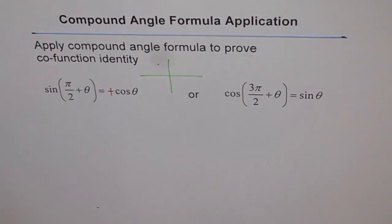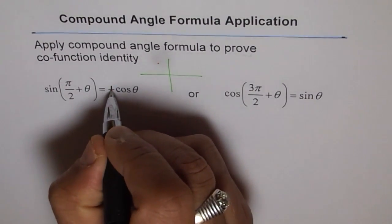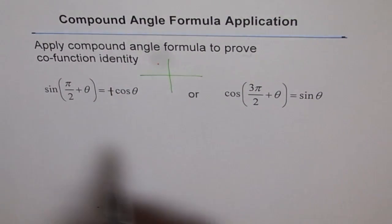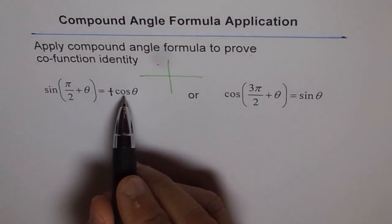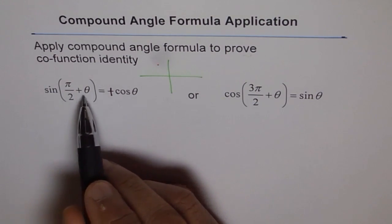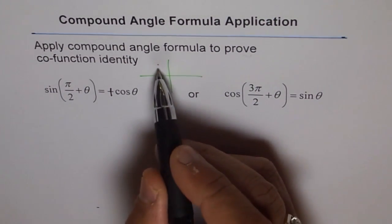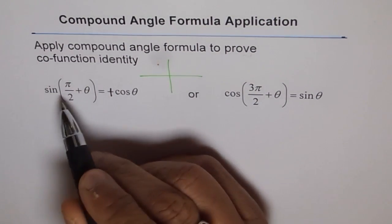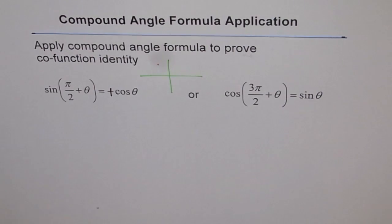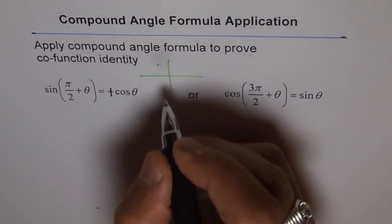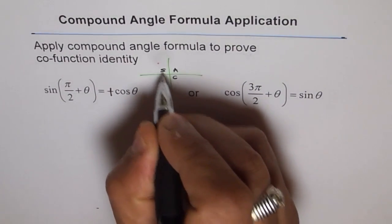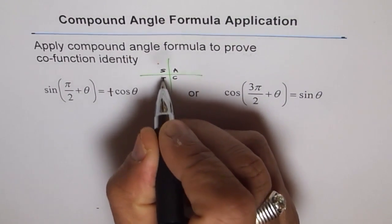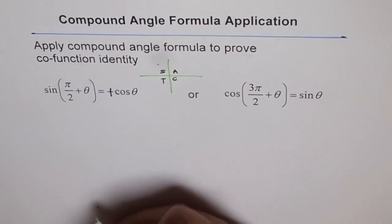It is a wrong question. Sine of π/2 plus θ should actually equal plus cos θ. Since π/2 plus θ places you in quadrant 2, and in quadrant 2 sine is positive — remember the CAST rule: C-A-S-T — since sine is positive, the result should be positive.